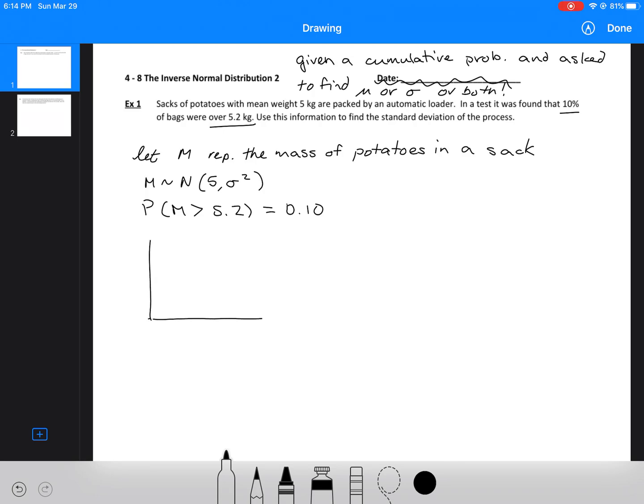I'm going to draw a sketch so I can visualize what's happening. I've got my normal shaped curve. I've got mu. I know that I'm looking at this is 0.1 and this is my m value, my mass of 5.2.